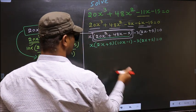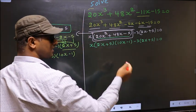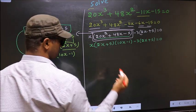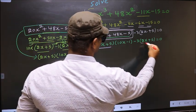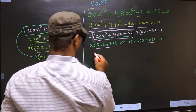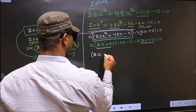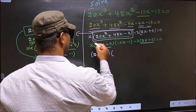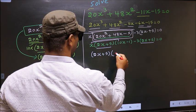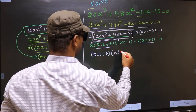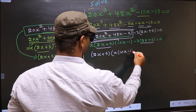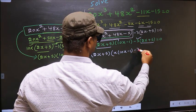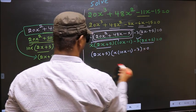From this entire equation, what can be taken out common is (2x + 5). So (2x + 5) outside; we are left with x(10x - 1), and over here we are left with -3, equal to 0.